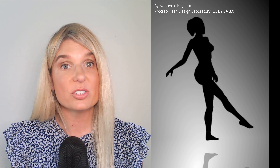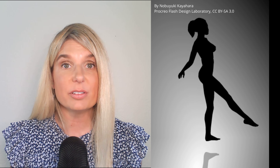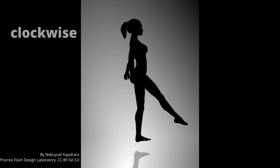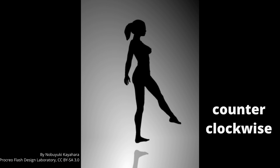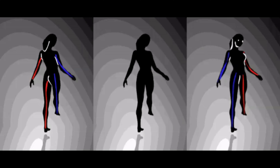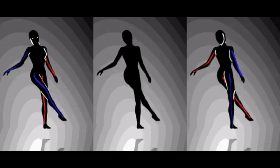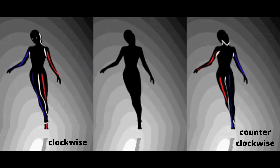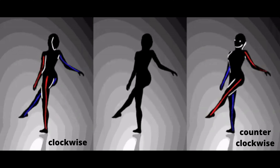Consider the spinning dancer. This illusion demonstrates that our brain's interpretation of visual information can be influenced. The dancer appears to spin either clockwise or counterclockwise, depending on how your brain interprets the ambiguous visual cues. We can influence the way we perceive she is spinning by adding a little context — some light and shadow.